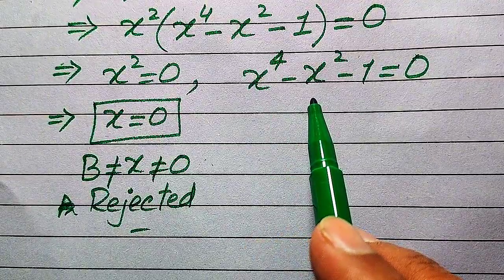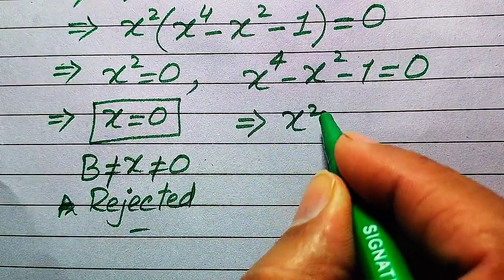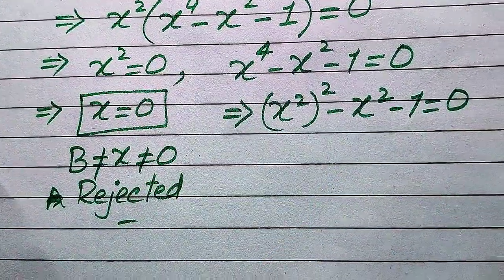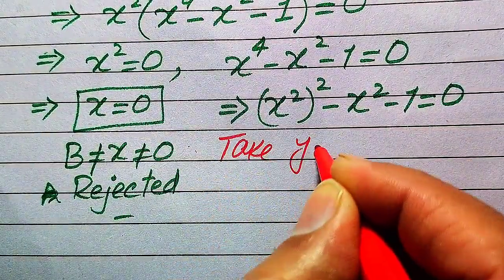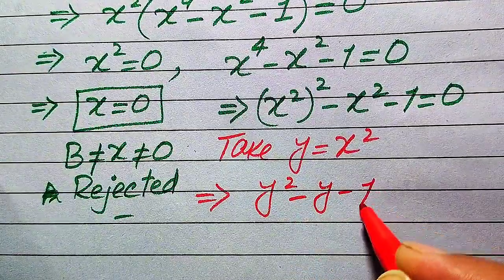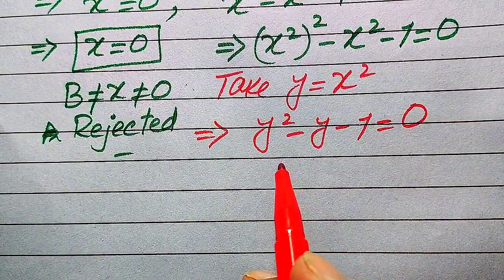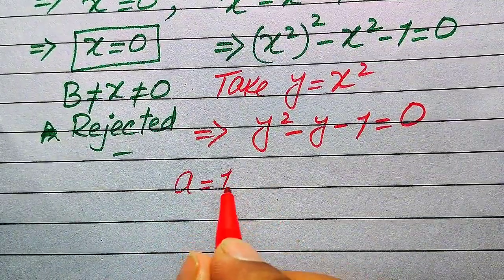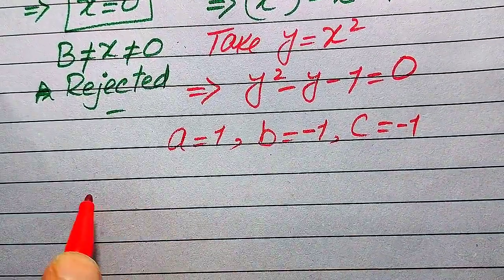We need to solve x⁴ - x² - 1 = 0. We convert this to a quadratic by writing it as (x²)² - x² - 1 = 0. Letting y = x², the equation becomes y² - y - 1 = 0. The coefficients are a = 1, b = -1, and c = -1.